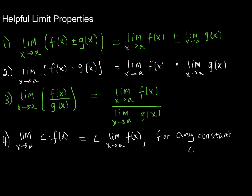These limit properties can be very helpful because if you have something that looks complicated, but you notice a part of it which looks familiar, you can work to isolate it — either by having that familiar part multiplied, added, or subtracted with something else — and then split it off. Hopefully you'll be able to not only take the limit of the familiar part, but the other one will also work out. I recommend that you try these on your own first, then compare and contrast with fellow classmates.